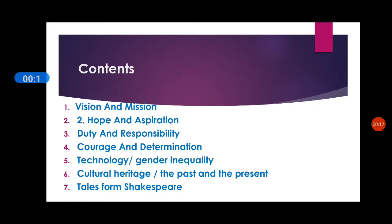The contents of the book are: vision and mission, hope and aspiration, duty and responsibility, courage and determination, technology, gender inequality, cultural heritage, the past and the present, and tales from Shakespeare. These are seven units listed here, and each and every unit is again subdivided into six chapters or lessons.